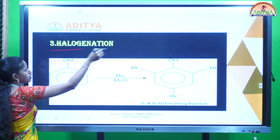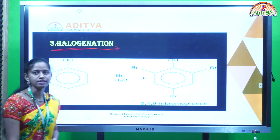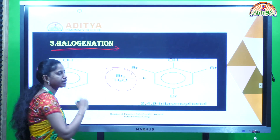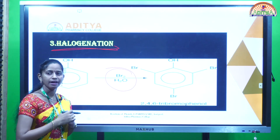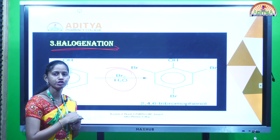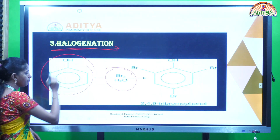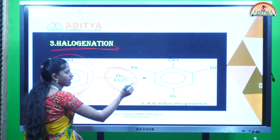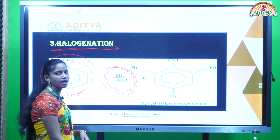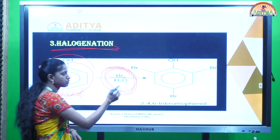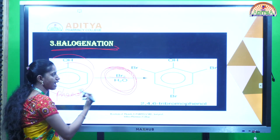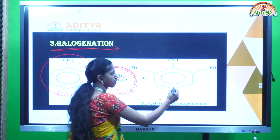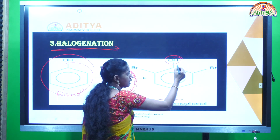The next reaction is the halogenation reaction. When phenols react with a halogen, it is forming halogenated compounds. Here, the phenol is reacting with a halogen atom — in this case, bromine. When phenol reacts with bromine, it is forming 2,4,6-tribromophenol. The phenol group is present with positions 1, 2, 3, 4, 5, and 6.